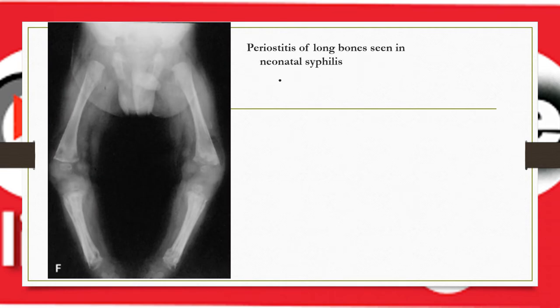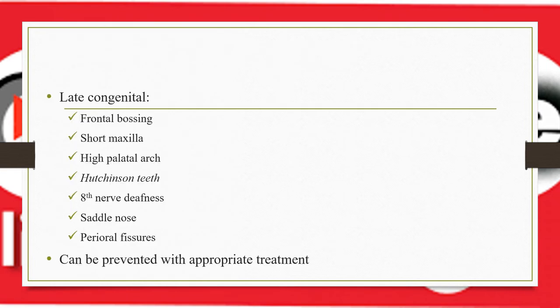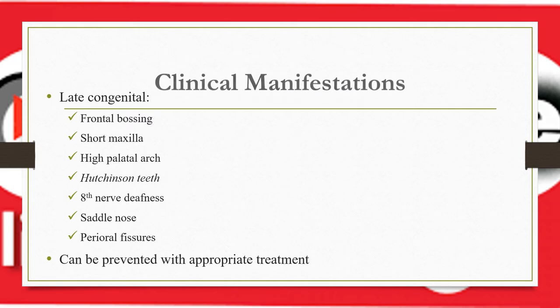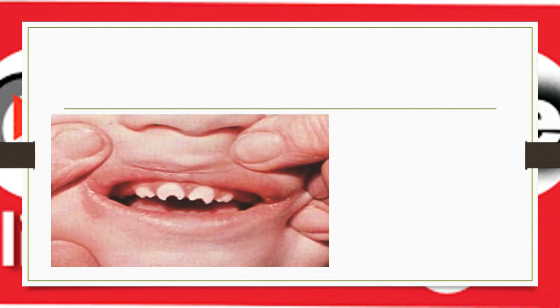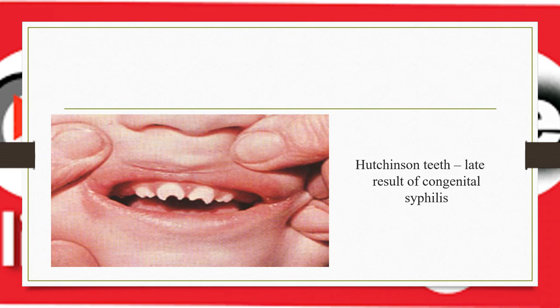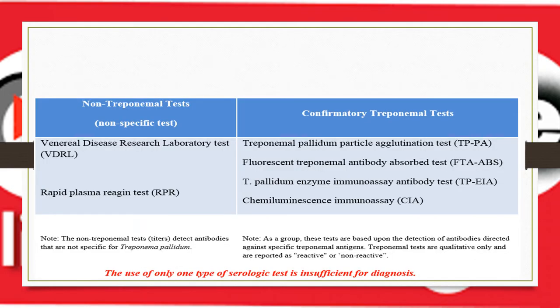This is an image of periostitis of long bones seen in early-onset neonatal syphilis. Late congenital syphilis presents with frontal bossing, short maxilla, high palatal arch, and Hutchinson's teeth and Steezy notched incisors. These late signs can be prevented with appropriate treatment. Hutchinson's teeth are a classic dental sign of late congenital syphilis.